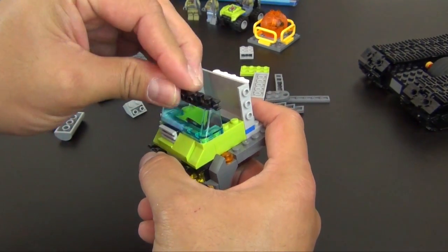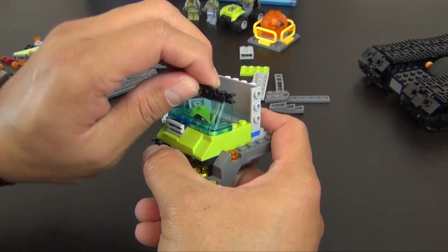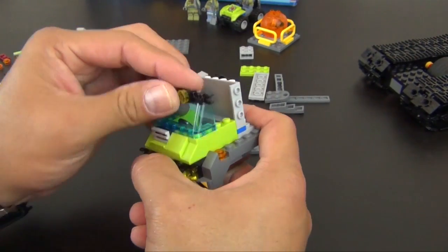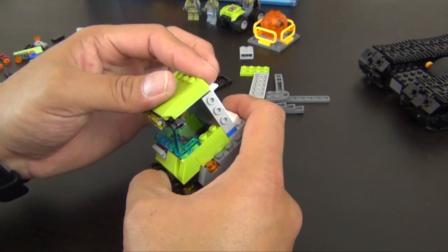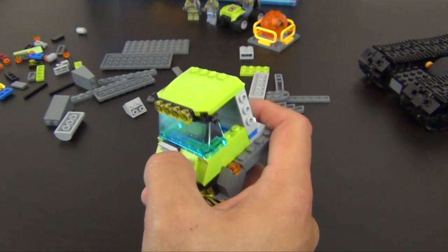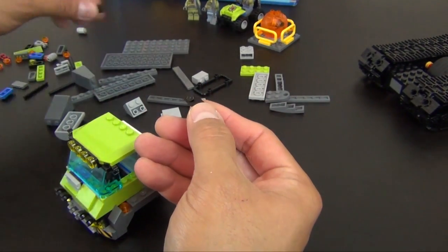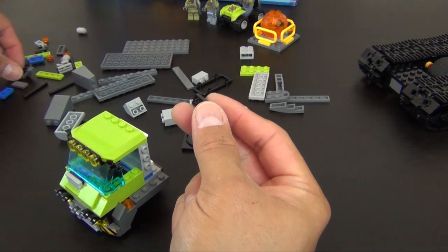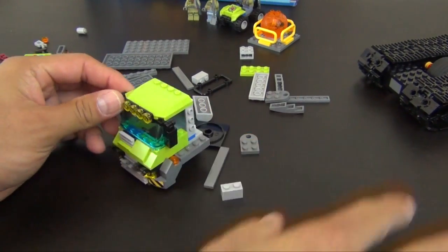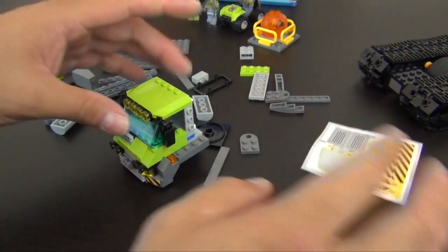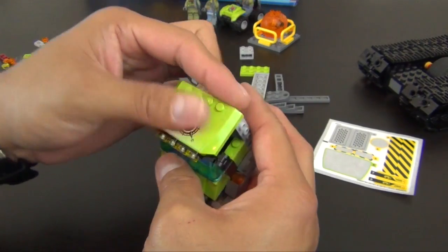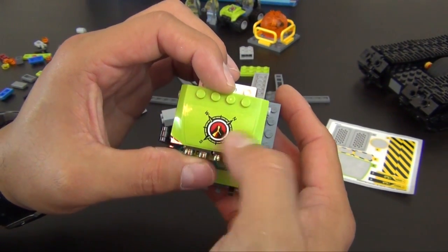Two plates with clips on them will be pointing out towards the side. A couple brackets and these get trans yellow one by one round tiles. So these are the work lights so they can see in the dark I guess. Roof of the cab.